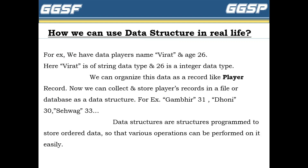How can we use data structure in real life? For example, we have a player's name — Virat — and age 26. Virat is a string data type and 26 is an integer data type. We can organize this data as a record, like a player record. We can then collect different players' records in one file or database — for example, Gambhir age 31, Dhoni 30, Sewag 30. Data structures allow us to store ordered data, organize it in a sequence, store it, and perform different operations on it easily.